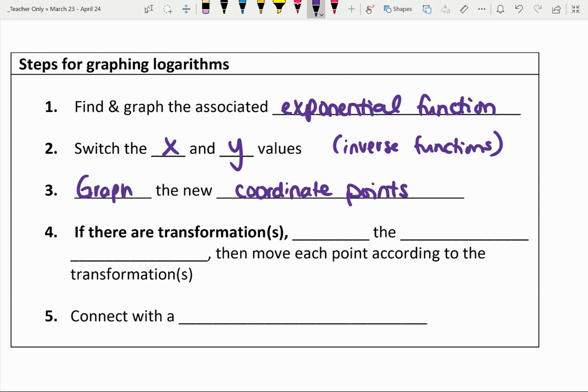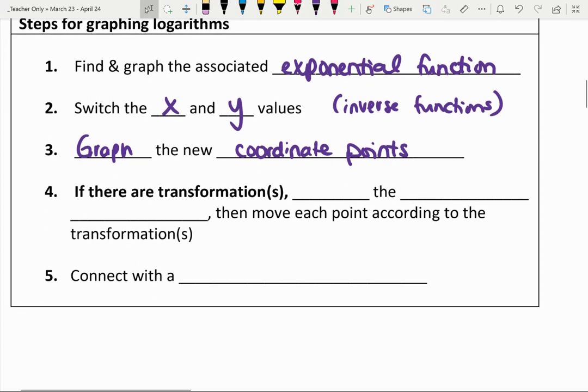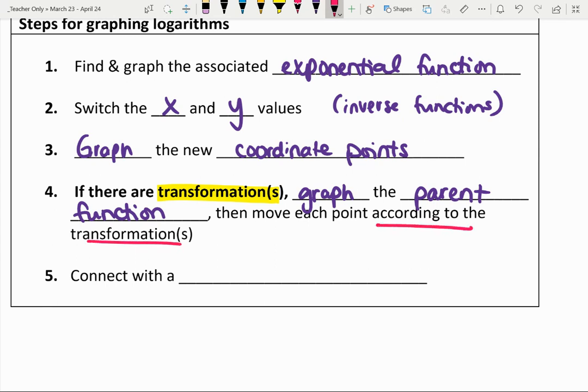Then we would graph the new coordinate points. Again, I don't even have to really graph the exponential function. I could graph it, obviously. But as long as I know the coordinate points for the exponential function, I can find and graph the coordinate points for the logarithmic function. Now, if there are transformations, and we're going to look at some examples of those, then what we want to do is we want to graph the parent function first. Remember, that's no transformations. And then move each point according to the transformations. For instance, if it tells us to go up two units, we're just going to move every point up two units.